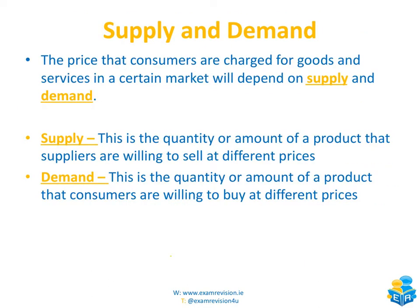This topic of supply and demand is centered around the influence it will have on price, because the price that consumers are charged for goods and services in a certain market will depend on supply and demand. Supply and demand aren't the only factors which influence price, but they are two dominant factors. Supply is the quantity or amount of a product that suppliers are willing to sell at different prices, and demand is the quantity or amount of a product that consumers are willing to buy at different prices.